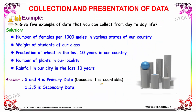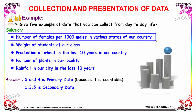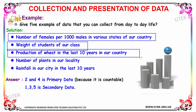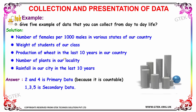Let's go with an example. We are given five examples of data collected from day-to-day life. The first is the number of females per thousand males in various states of our country. The second is the weight of students of a class. The third is production of wheat in the last 10 years. The fourth is the number of plants in our locality. The fifth is rainfall in our city in the last 10 years.